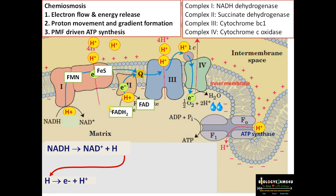There are proton channels within the protein complexes such as cytochromes, so there is a difference in the number of protons in the intermembrane space. This creates proton gradient formation — the number of protons in the intermembrane space increases compared to the matrix side, creating a more positive charge. This can be called an electrochemical gradient.